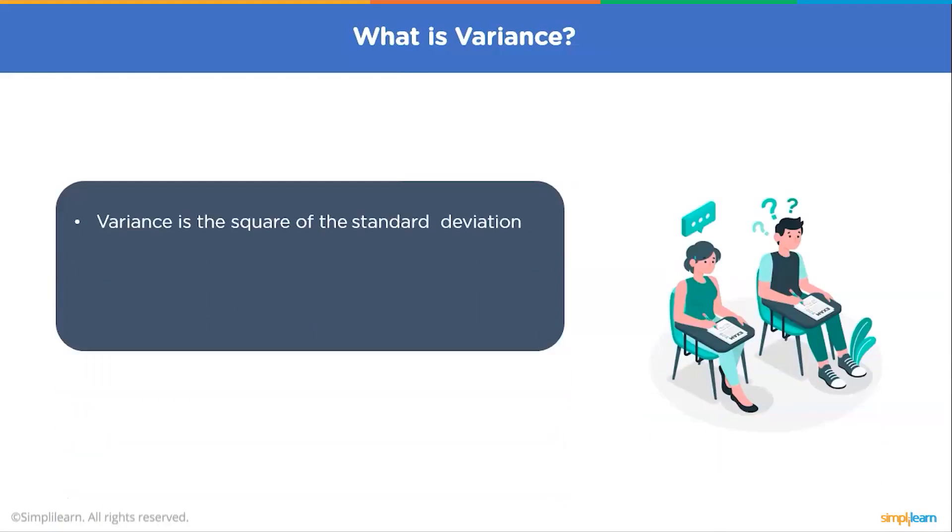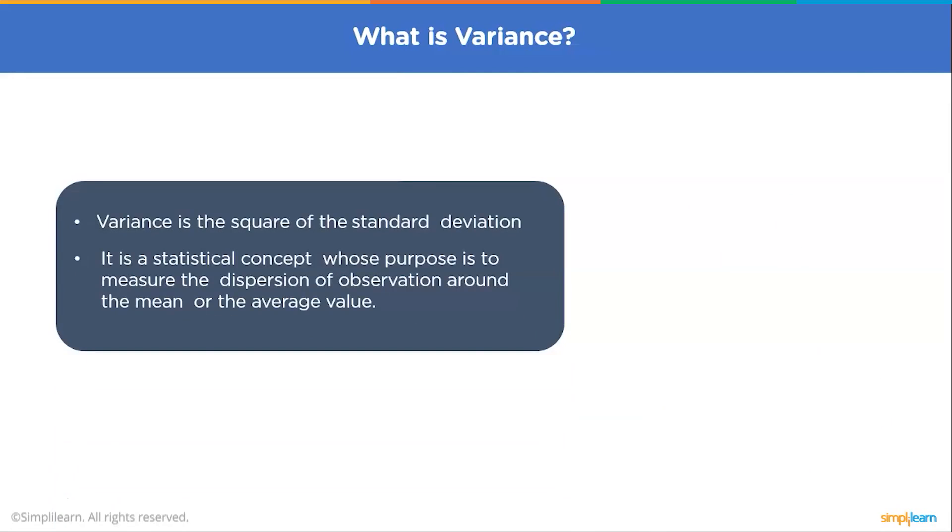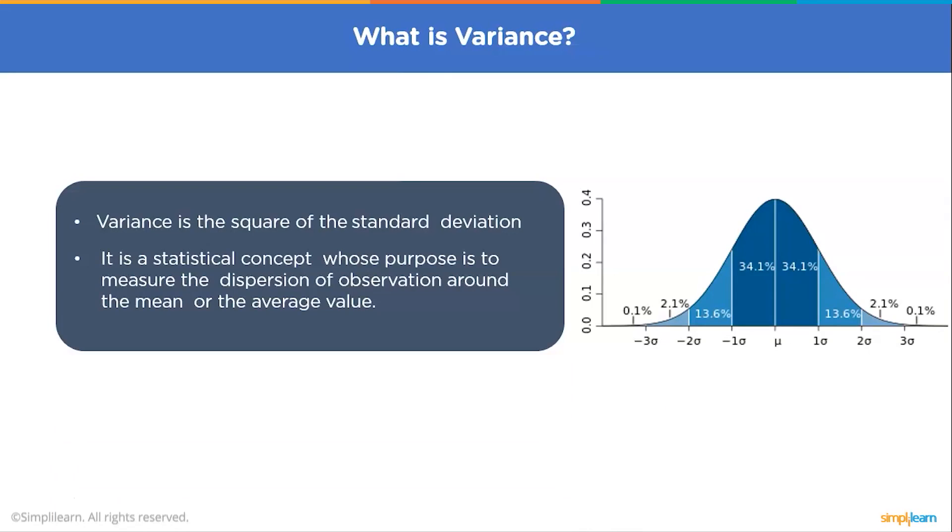So what is variance? You can say variance is the square of the standard deviation. It is a statistical concept whose purpose is to measure the dispersion of observation around the mean or the average value. Variance tells the degree of spread in your data set. The more spread the data, the larger the variance is in relation to the mean, and you can see with the graph. Our central line mu is the mean, and on either side of the mean you can see the spread of the data. The major difference between the standard deviation and the variance is that standard deviation is expressed in the same units as the original values, suppose exact meters. Variance is expressed in much larger units, example meters squared. Since the units of variance are much larger than those of a typical value of a data set, it's harder to interpret the variance number accurately. That's why standard deviation is often preferred as the main measure of variability.